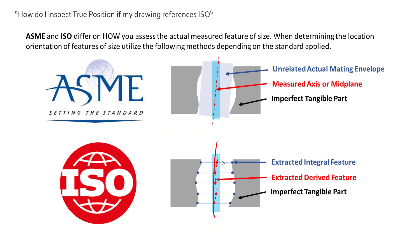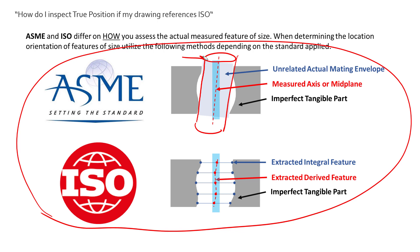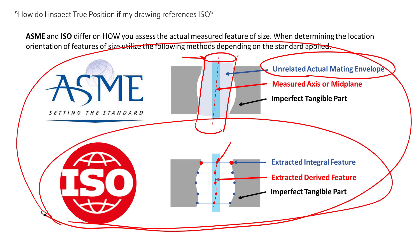Now for those of you in the inspection world, this might look like a hybrid of what you're actually doing depending on the tooling and what you're using to measure that position. For those of us using best-fit gauge pins in a hole and checking the location of that gauge pin, you're doing something very close to mimicking the unrelated actual mating envelope. For those of us with a large diameter who come in with a height gauge to find where each surface is and then find the midpoint between them, you're measuring a little closer towards the ISO side of things.